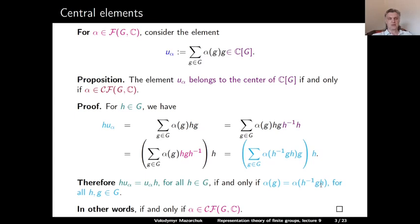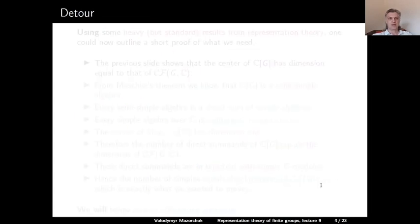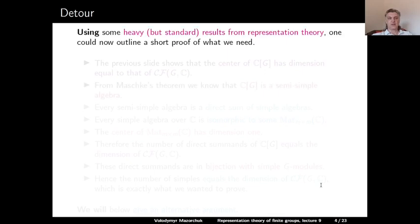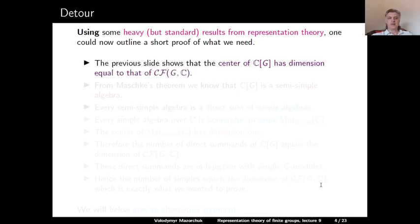In other words, if and only if alpha is a class function on G. So this proves our proposition. Using this statement and some standard but quite heavy results from representation theory, we can outline a short proof of the claim we are trying to prove. The previous slide shows exactly that the center of the group algebra has dimension equal to the dimension of the space of class functions.